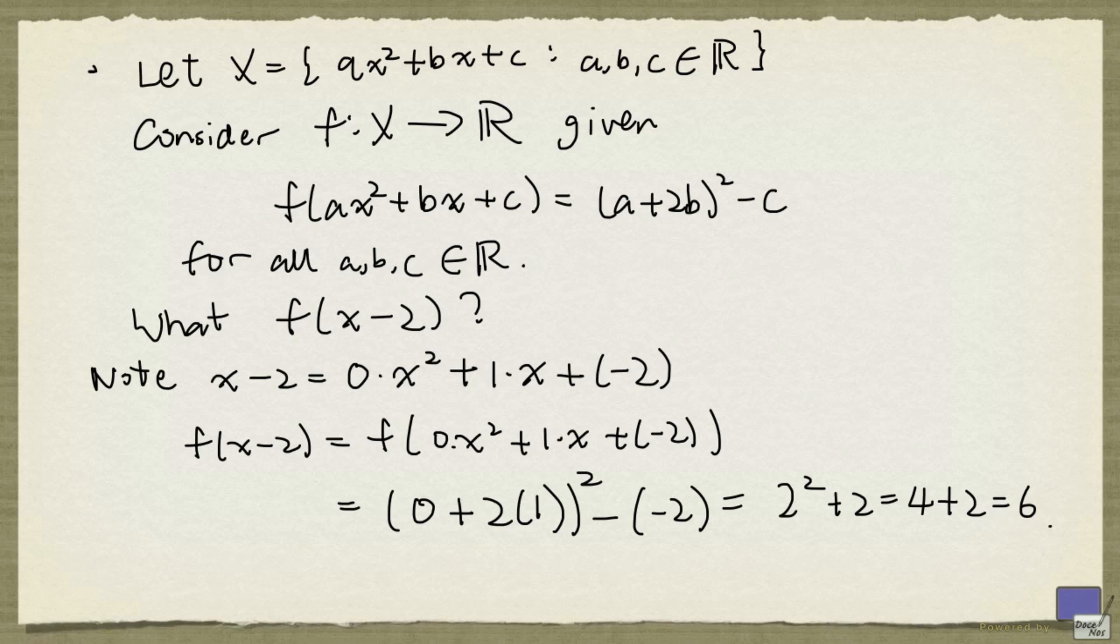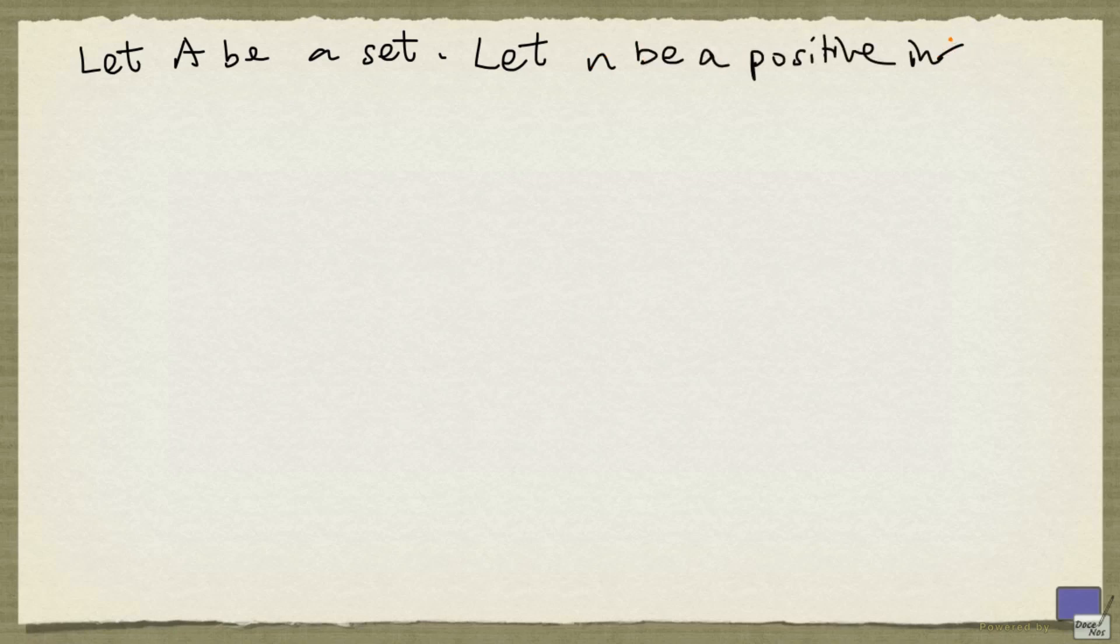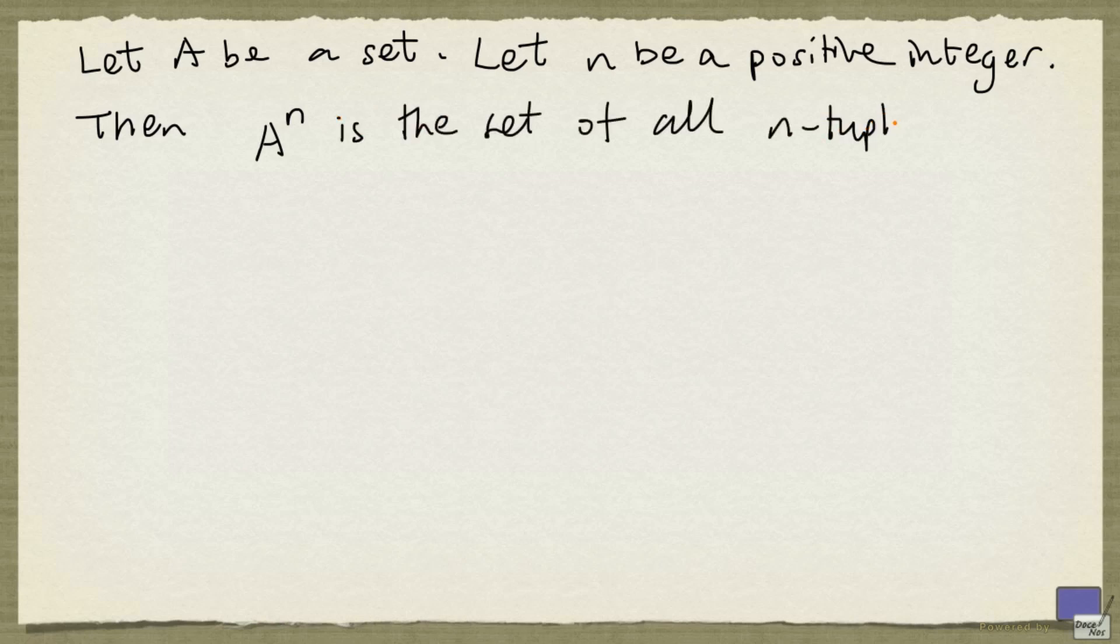Before we look at the final example, let us look at a new notation. Suppose that A is a set and n is a positive integer. Then A^n denotes the set of all n-tuples whose entries are elements of A.